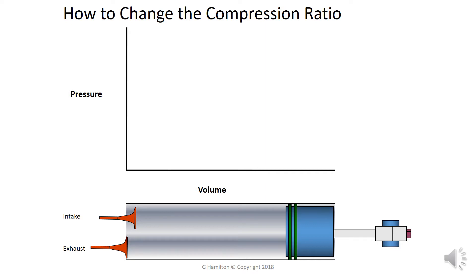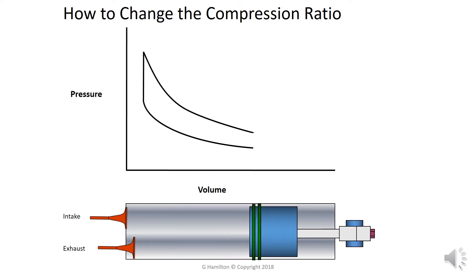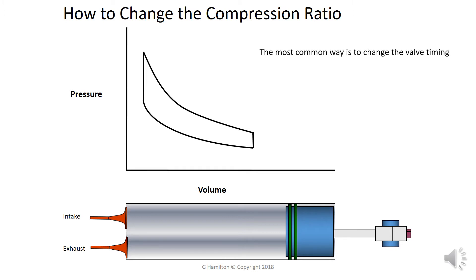How to change the compression ratio: most engines at the moment compress it and open and close the valves at different times. This section here can be advanced - that's where my exhaust valve opens up and this is where my inlet valve opens up. I could change that to over here somewhere, and I could change my inlet valve to here, so that's how we change the compression ratio. My effective stroke is then from here to here, not from there to there. That's the most common way of doing it. VVTI does it the same way, Honda uses VTEC, and a few other manufacturers use different systems.